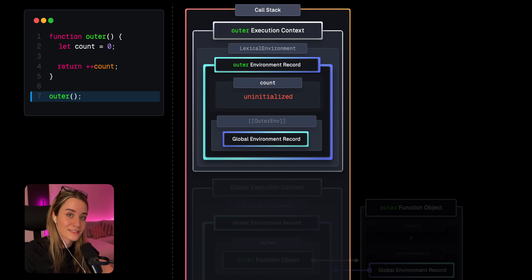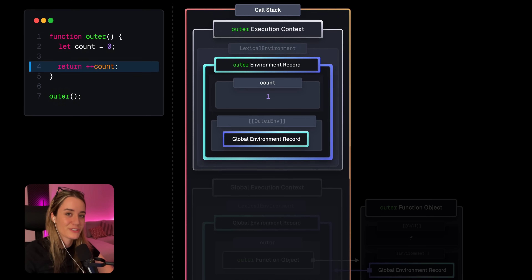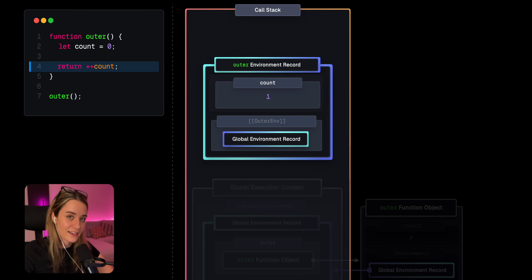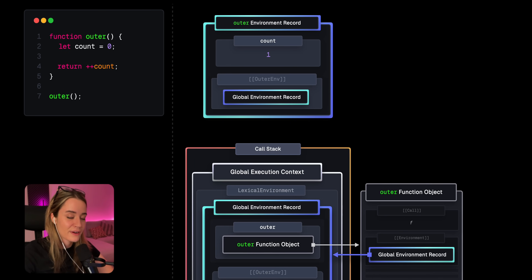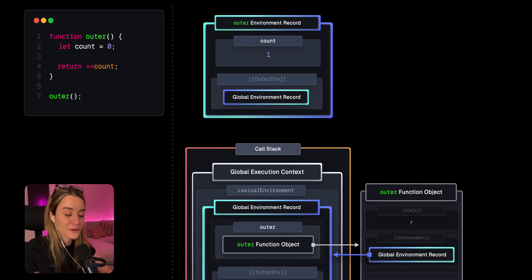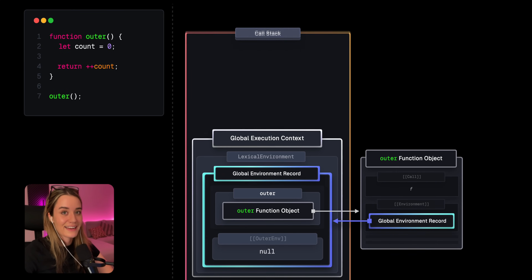During the execution phase, the execution context is pushed onto the call stack and the code is executed. After returning from a function, the execution context is removed from the call stack and eventually garbage collected. Normally — not talking about closures here — it is only the function execution context that holds a reference to the function environment record. So when the function execution context has been garbage collected, there are no other references to this environment record, which signals the garbage collector to collect it as well.